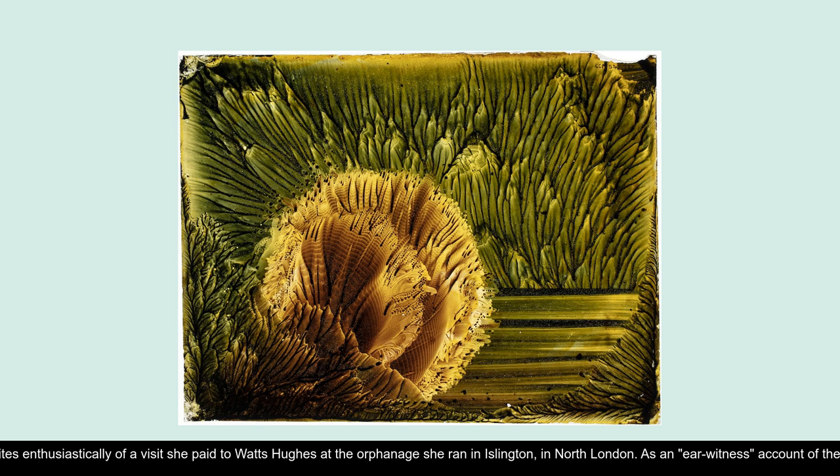In a letter to the editor of The Spectator in 1889, the novelist Emily Barrington writes enthusiastically of a visit she paid to Watts Hughes at the orphanage she ran in Islington in north London. As an ear-witness account of the production of impression figures, it is as valuable as the Pall Mall article discussed above. But just as fascinating is the breathless description of the way that these works are displayed. 'Instead of blinds or curtains drawn across the lower panes of the windows, there are wonderful designs in color, strange beautiful things—suggesting objects in nature, but which are certainly neither exact repetitions nor imitations of anything in nature.'